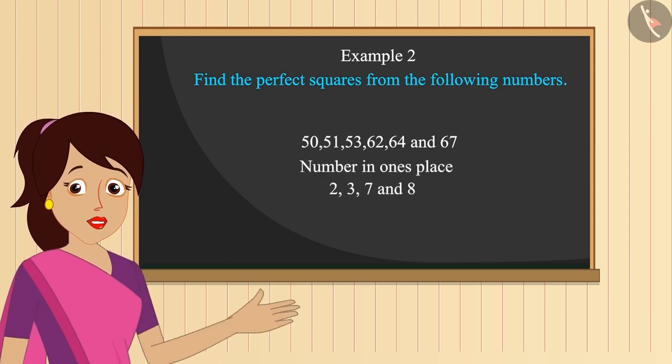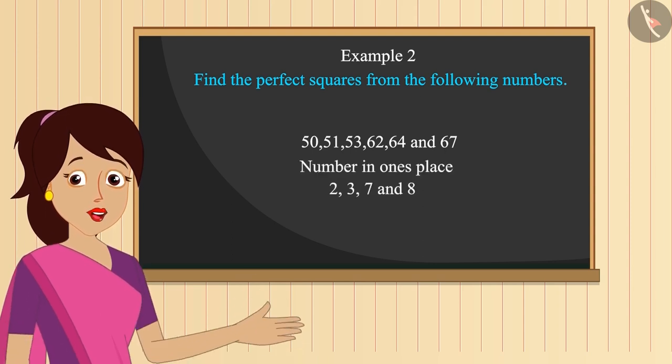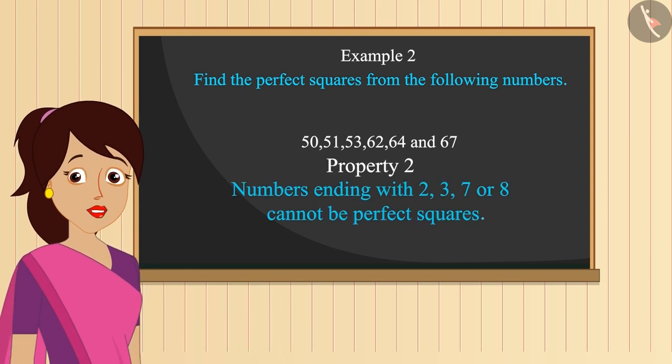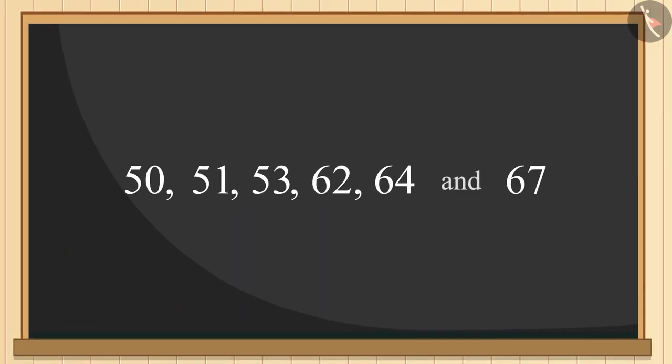We know that if a number has one of these digits in its units place, then that number can never be a perfect square. Hence, the numbers 53, 62 and 67 cannot be perfect squares.